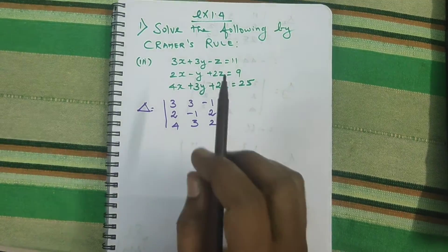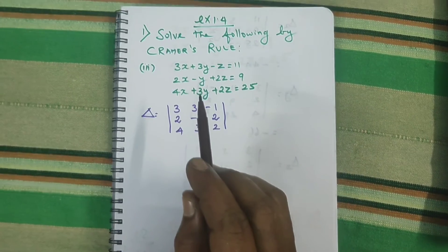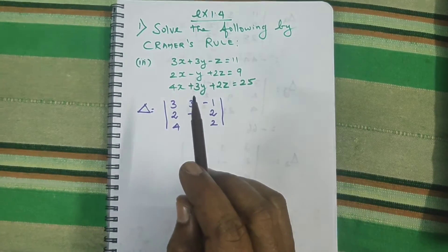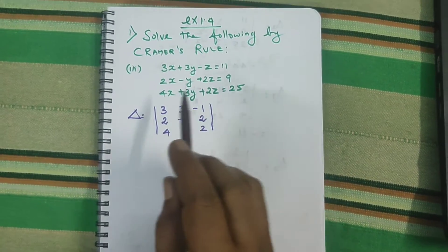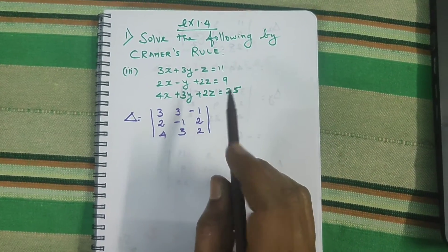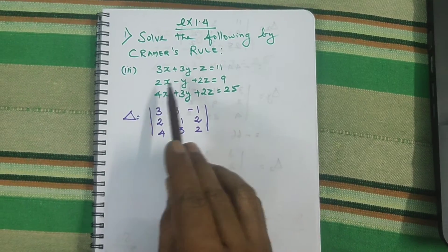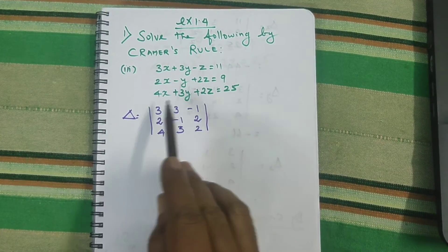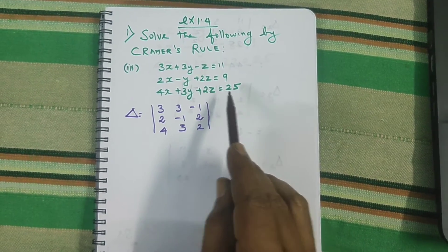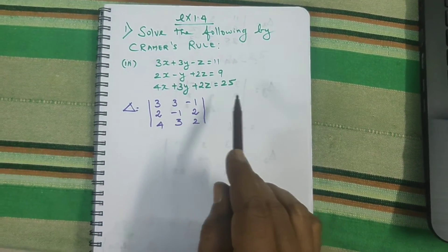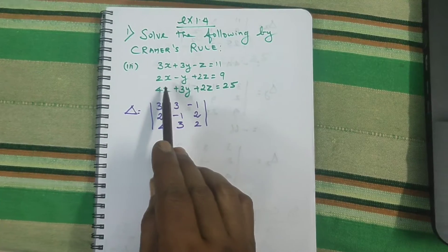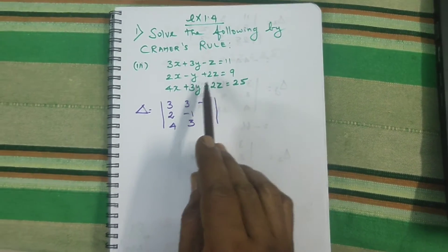In Exercise number 1.4, solve the following by Cramer's rule. We have 3 linear equations with 3 variables.